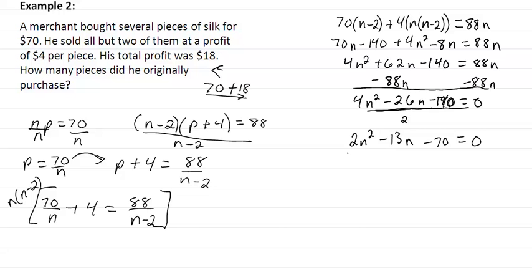This factors as two n plus seven times n minus ten equals zero. The factor two n plus seven gives a negative answer, so we ignore that one. Therefore n equals ten — there were ten pieces of silk to start with.